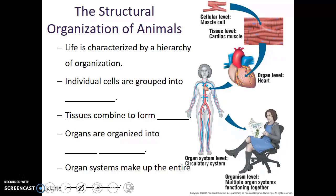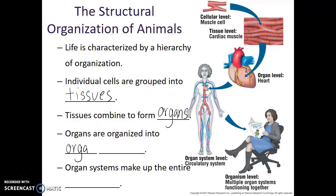Individual cells will be grouped into tissues. These tissues will combine to form organs. Organs are members of organ systems. And those organ systems will then combine to make the entire organism.